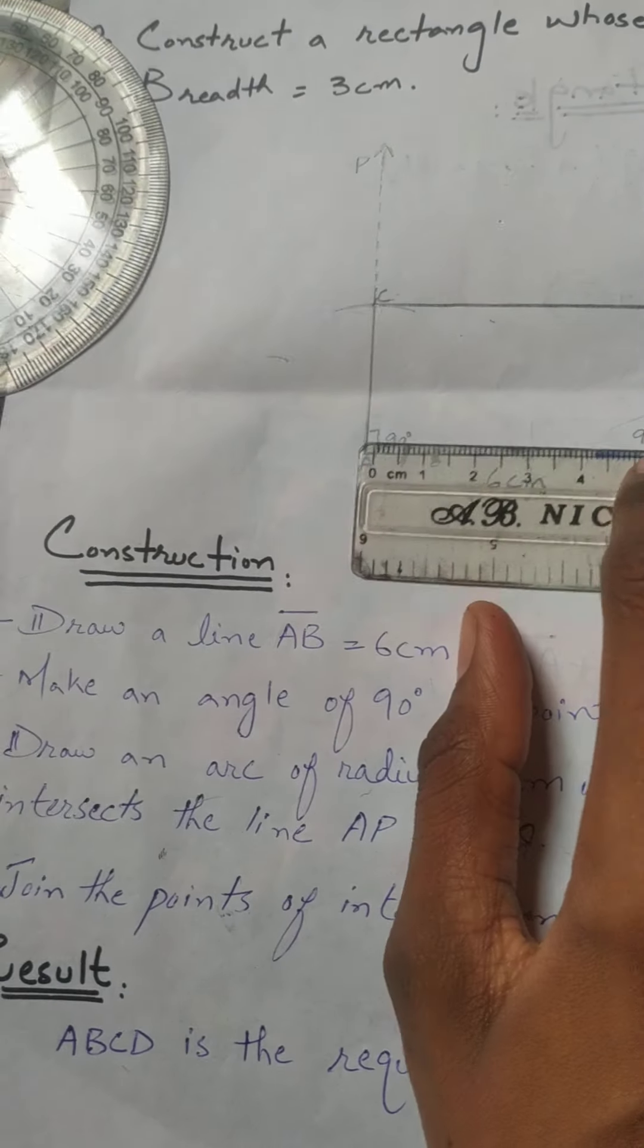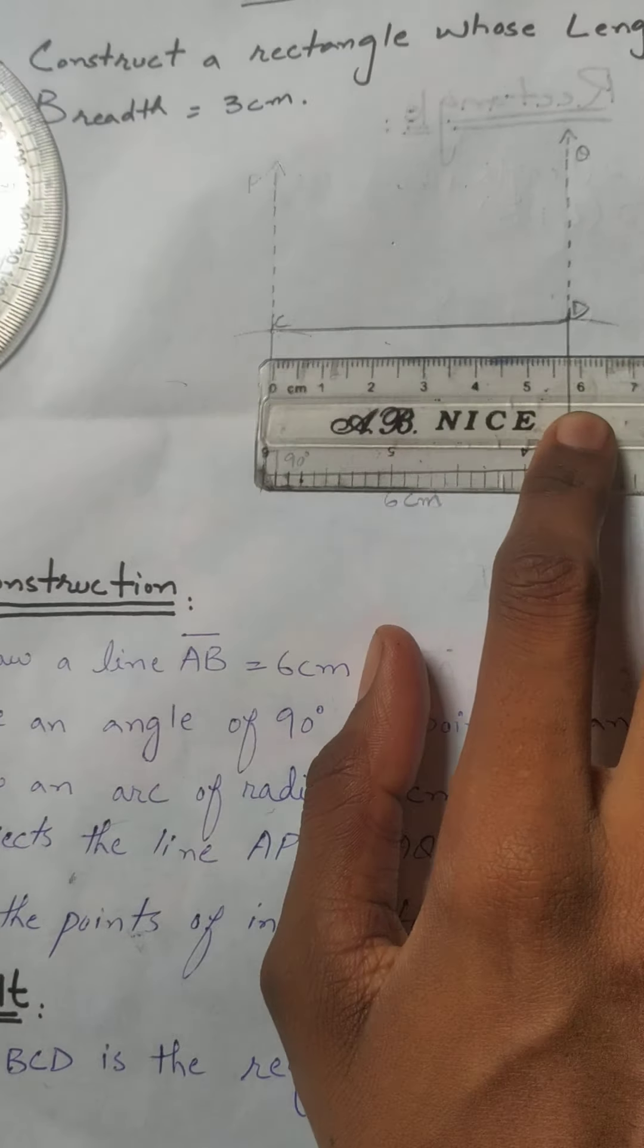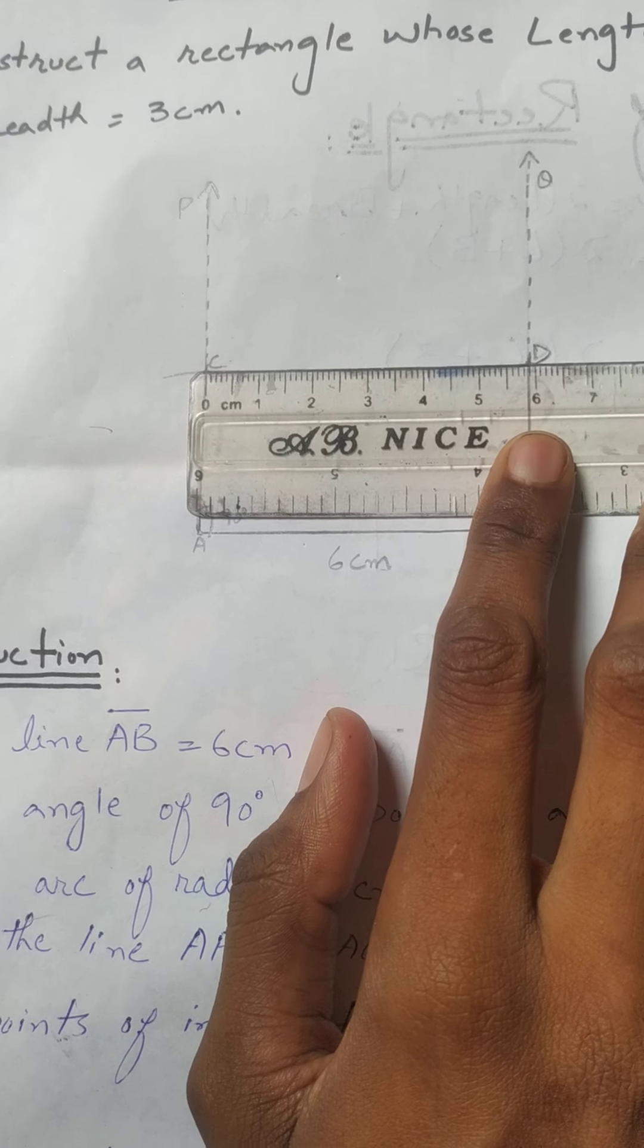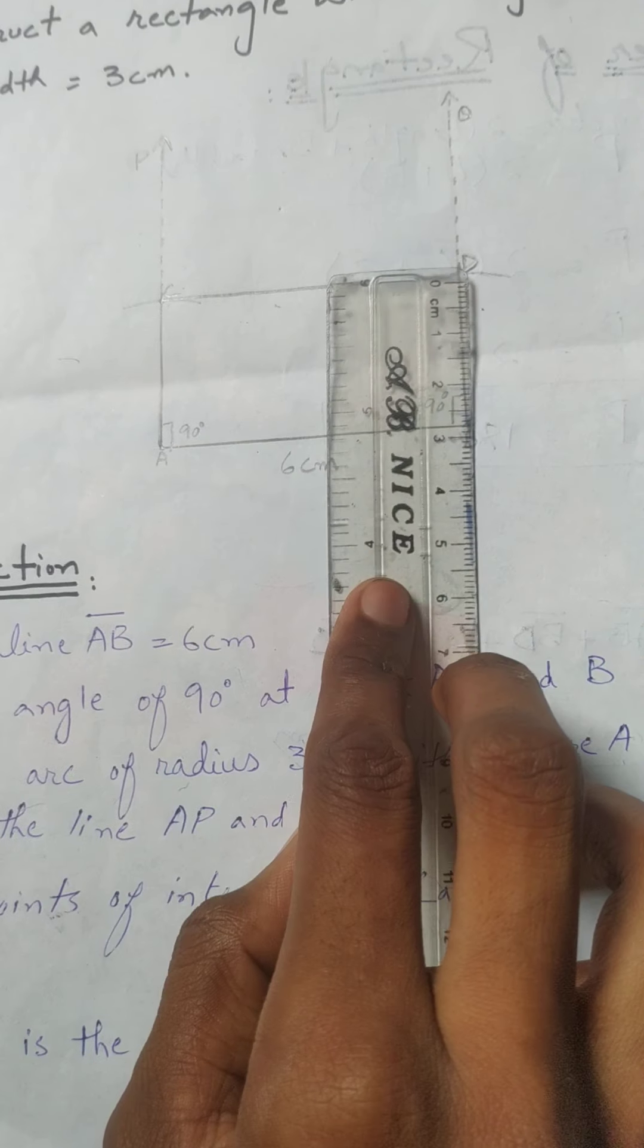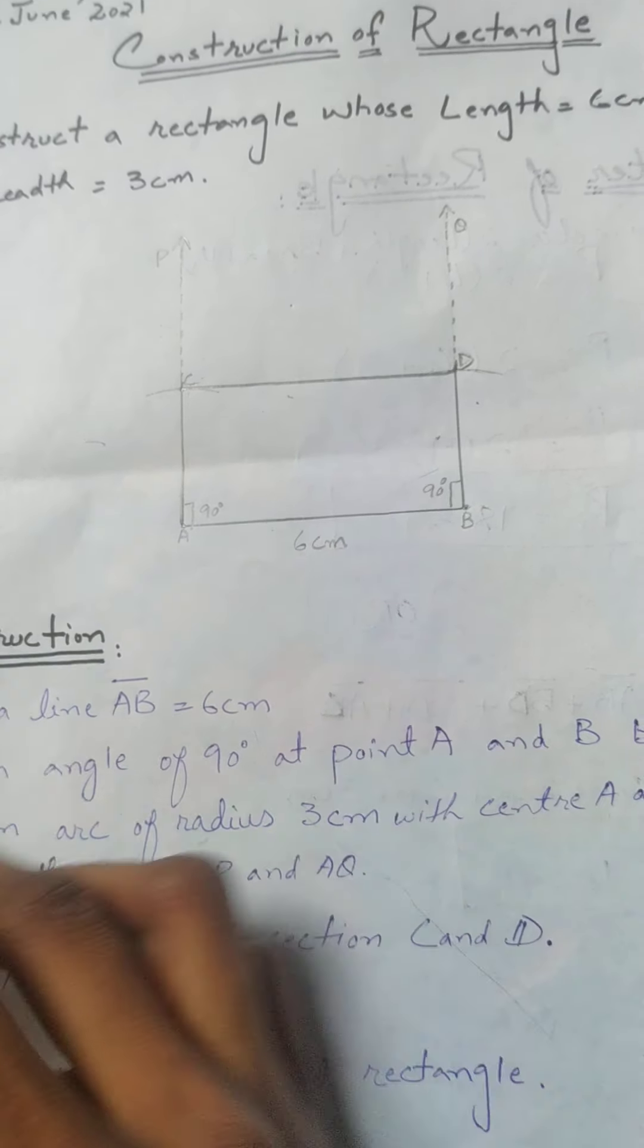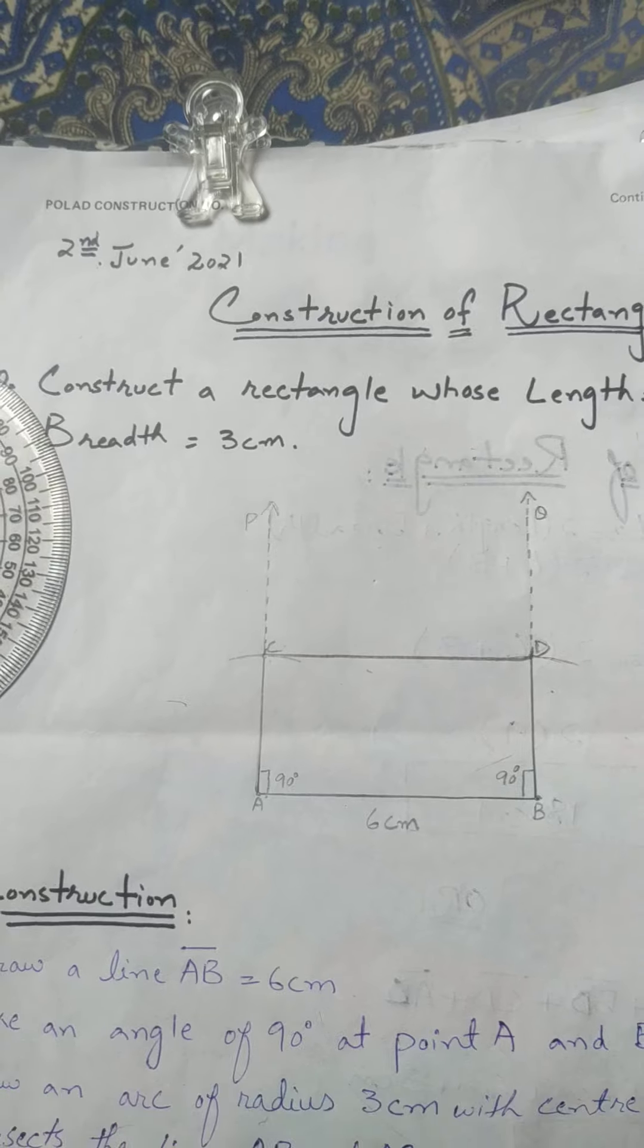If you want to measure it, the length is 6 cm and the opposite side is also 6 cm. Similarly, the width is 3 cm and the opposite side is 3 cm. This is how we construct a rectangle.